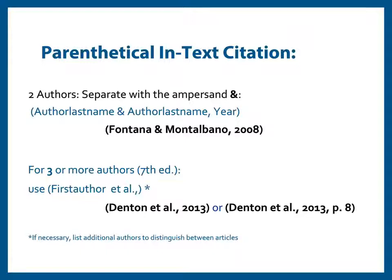Once there are more than two authors, list only the first author listed on the source along with et al. — that is e-t, space, a-l, period — comma, and the year. Et al. is an abbreviation of et alia, which is Latin for 'and others.' 'Et' is not an abbreviation and is not followed by a period. 'Al.' is shortened from alia and is followed by a period, then the comma and year. For direct quotes, you will also be adding information about the page numbers.